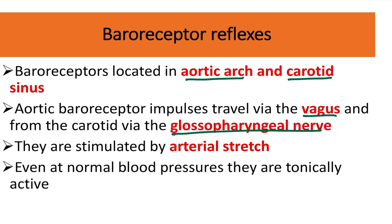The aortic baroreceptors send signals via the vagus nerve, and the carotid sinus uses the glossopharyngeal nerve. They are stimulated when blood volume increases, which stresses the arterial wall. Importantly, even at normal blood pressure, they are chronically active — continuously active at all times to maintain normal blood pressure, blood volume, and heart rate.